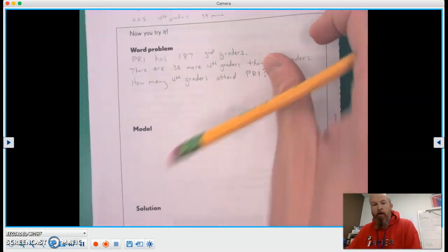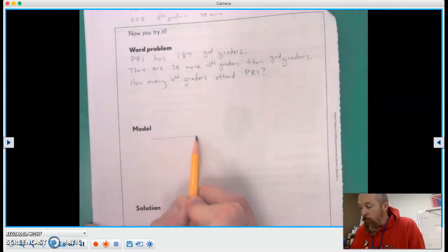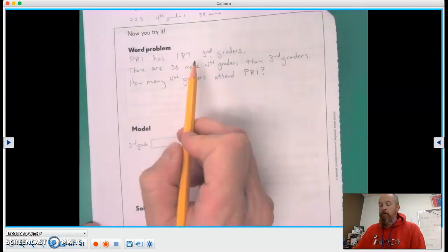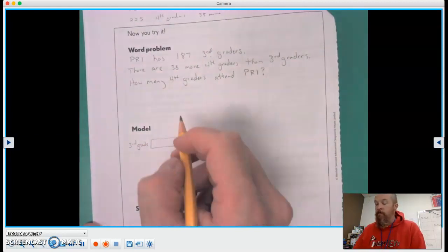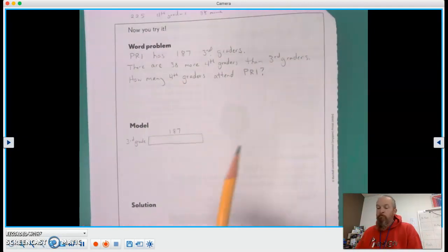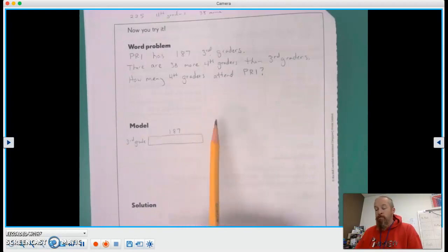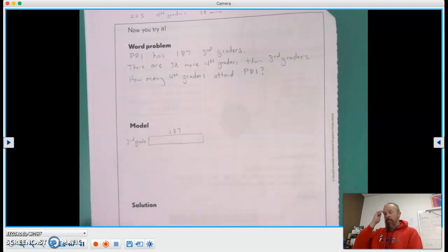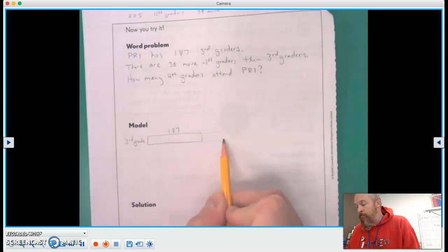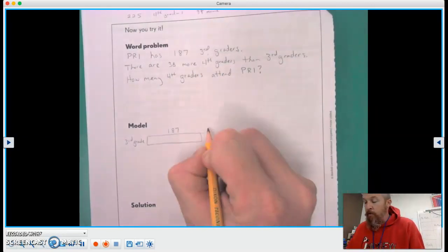So now we're going to come down and write in our bar model. I'm going to draw a little bar model across here and label that third grade. We know that there are 187 third graders, so I'm going to put the 187 there. We know that there are 38 more fourth graders, which means there's 38 less third graders, right? So we can add that on to here. This is going to be our difference there, 38, and we'll go less than.